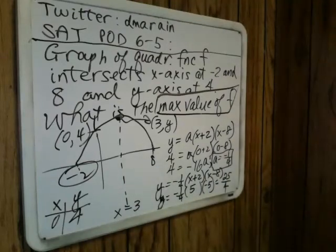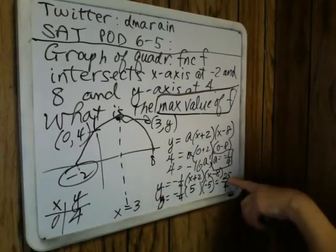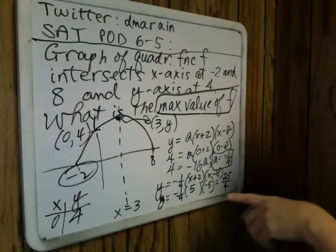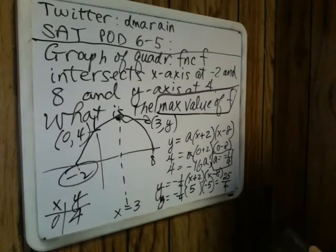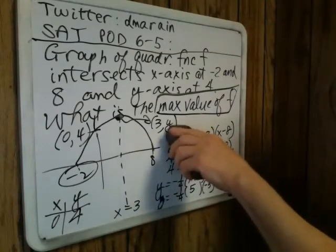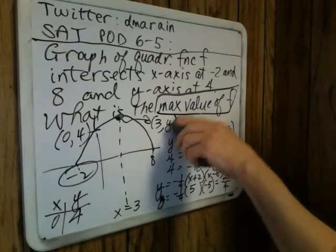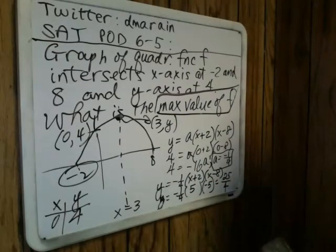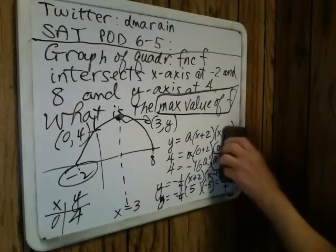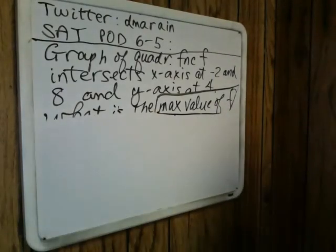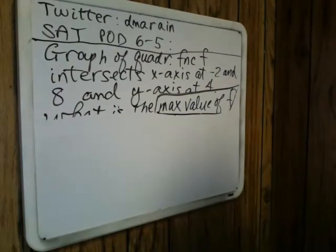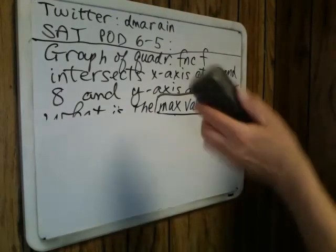We're halfway through. So 25 fourths is the maximum value. This is one of many methods — we could get into the quadratic formula, relationships between the product of roots, and various formulas for the axis of symmetry and the y-coordinate of the vertex. I'm not a big fan of those formulas because they're quickly learned and quickly forgotten. You retain what makes sense, what you can visualize, and the most basic concepts. And that's what I just demonstrated.